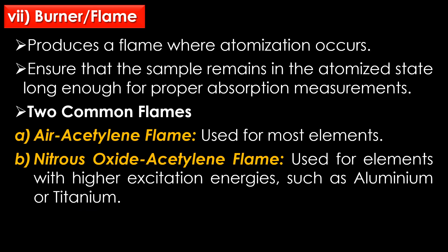The seventh part is the burner or flame. The burner produces a flame where atomization occurs, and it helps ensure that the sample remains in the atomized state long enough for proper absorption measurements. There are two types of common flames: the air-acetylene flame, used for most elements, and the nitrous oxide-acetylene flame, used for elements with higher excitation energies such as aluminium or titanium.